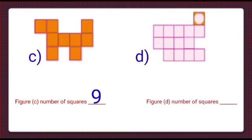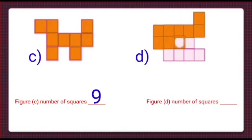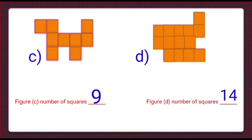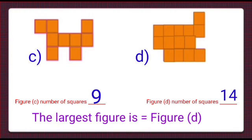In part D, we will now count the squares: 1, 2, 3, 4, 5, 6, 7, 8, 9, 10, 11, 12, 13, and 14. It has 14 squares. So the largest figure is part D, which has the maximum number of squares.